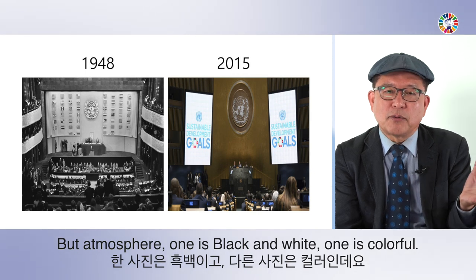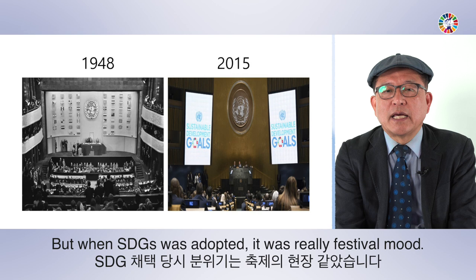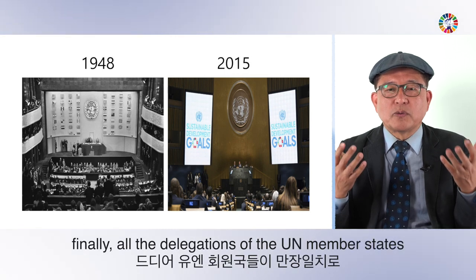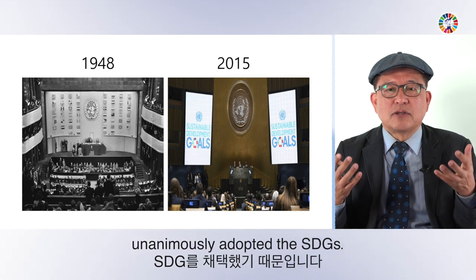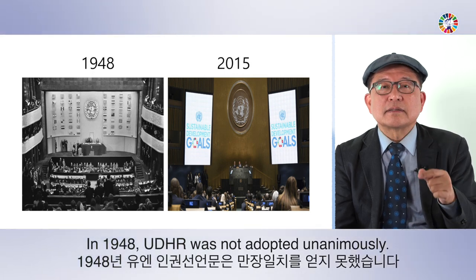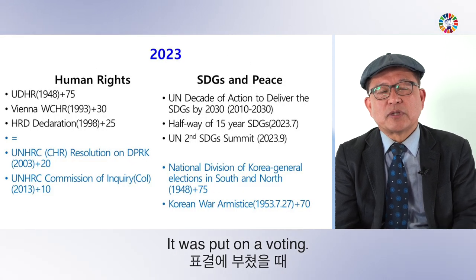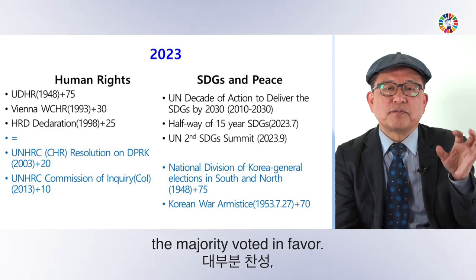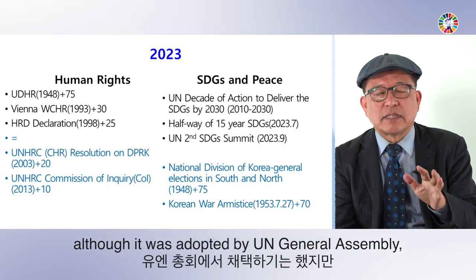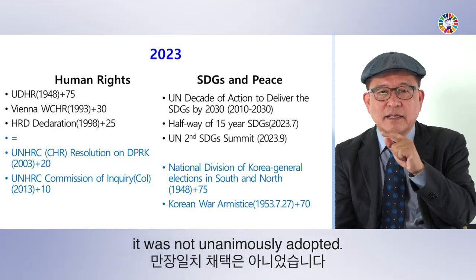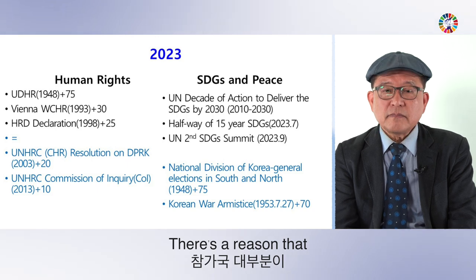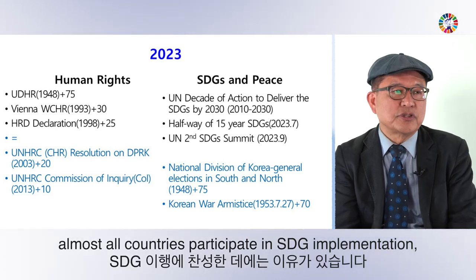When SDGs were adopted in 2015, it was a festive mood — people were excited. After three years of negotiation, all UN member state delegations unanimously adopted the SDGs. By contrast, the UDHR in 1948 was not adopted unanimously — it was put to a vote, with some abstentions. That shows it was politically controversial from the beginning, unlike the SDGs which achieved unanimous adoption.